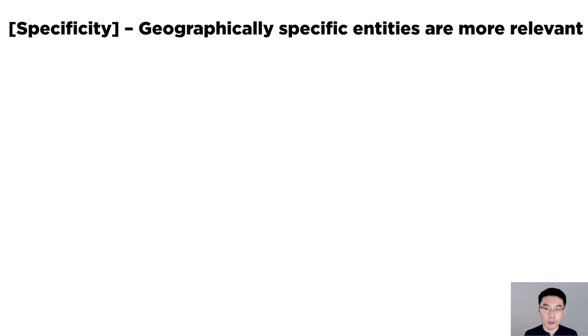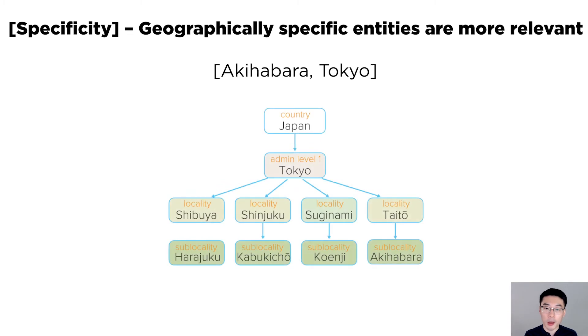First, more geographically specific locations are often more relevant. CrossCast utilizes the hierarchical relationship among locations and assigns a higher score to more specific locations.